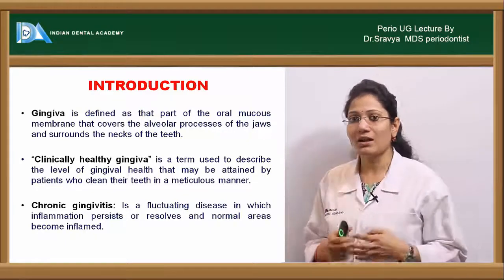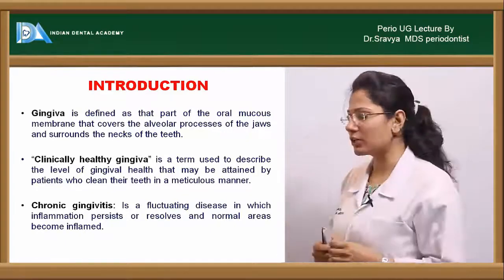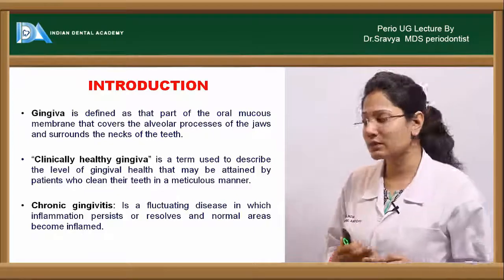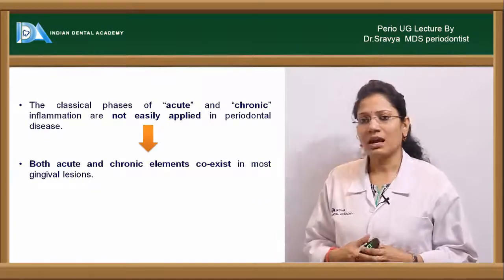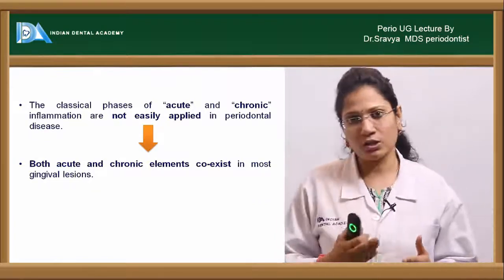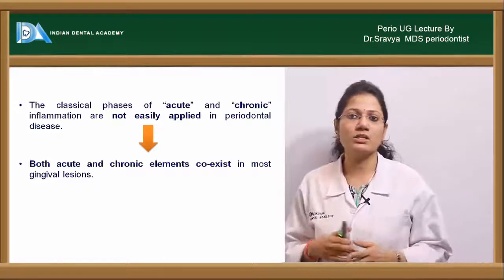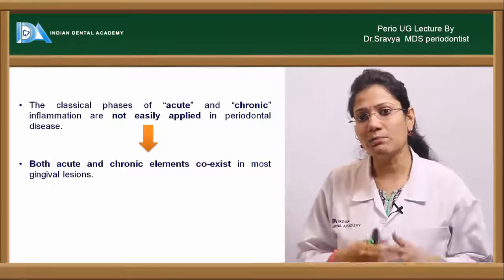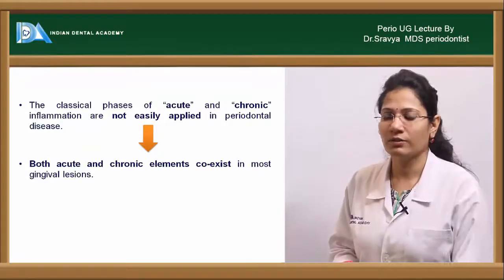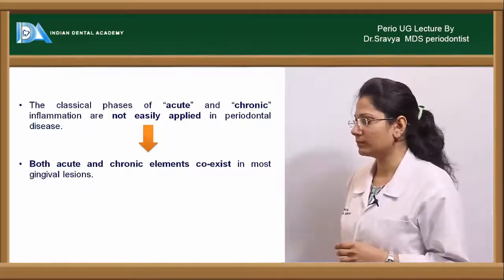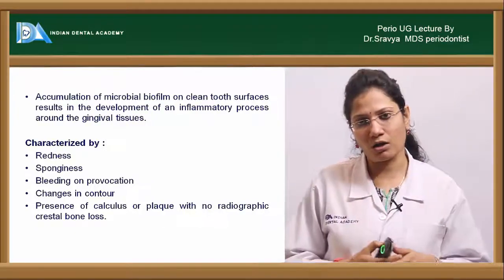Chronic gingivitis is a fluctuating disease in which the inflammation persists, or it resolves and normal areas become inflamed. The classical phases of acute and chronic inflammation are not seen separately in periodontal diseases. Most of the time, what you see would be a combination of acute and chronic features of inflammation — they both coexist in periodontal diseases.